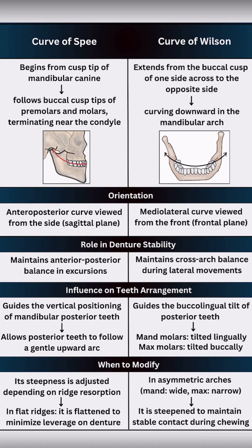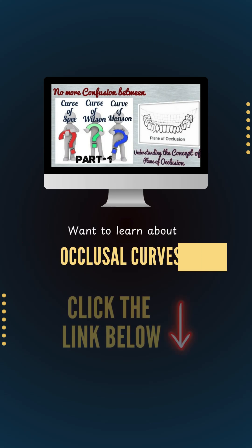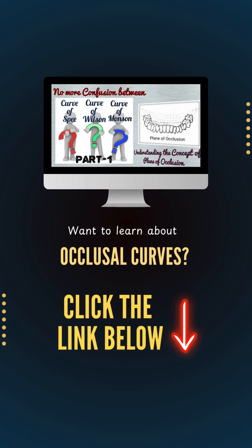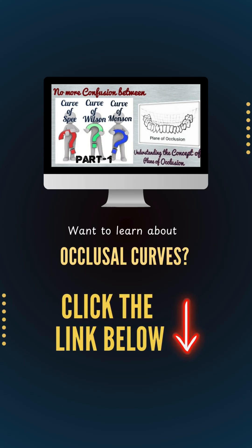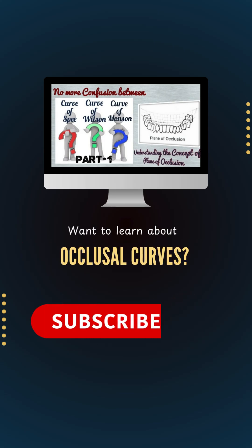Both curves are important for bilateral balanced occlusion. Neglecting them causes denture instability, discomfort, and ridge trauma. Want to learn about these occlusion curves in depth? Click the link below and subscribe to Dentistified if you are serious about Prosthodontics.